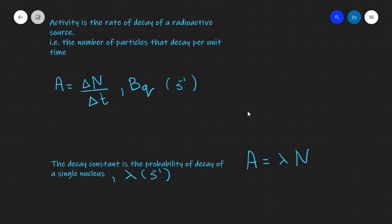Today we're going to be discussing the activity of a radioactive source. The activity of a radioactive source is the rate of decay — the number of particles that decay per unit time.